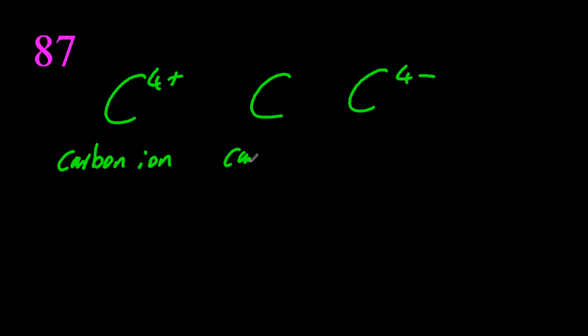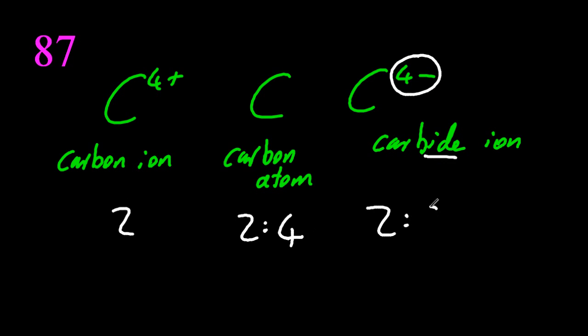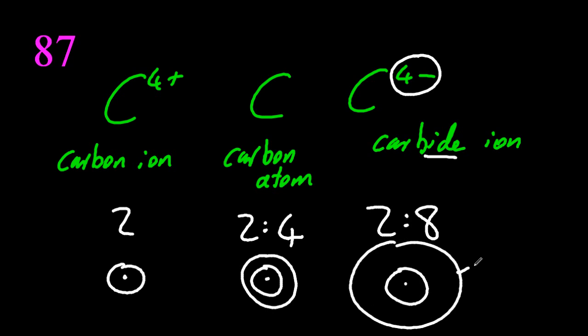The carbon ion, the carbon atom, and the carbide ion. Iide means it's negative. So I put it in the electronic configurations. That's the smallest to the biggest. The carbide ion is the biggest because of the extra electrons cause repulsion in the electron cloud.